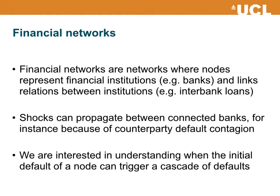Financial networks, or at least the types of financial networks we are going to consider in this lecture, are networks where nodes represent financial institutions such as banks, and links represent relations between these institutions, for instance interbank loans. Shocks can propagate between connected banks, for instance because of counterparty default contagion. There are different types of connections that can exist between financial institutions, but for now let's consider the example of loans.